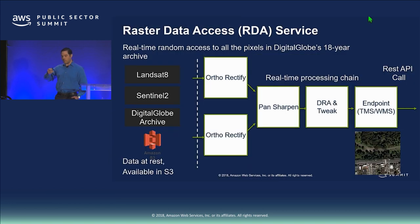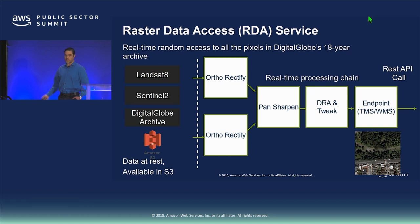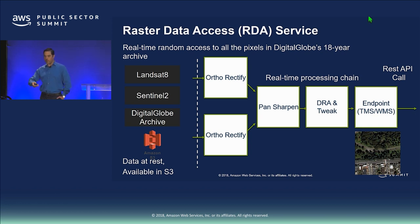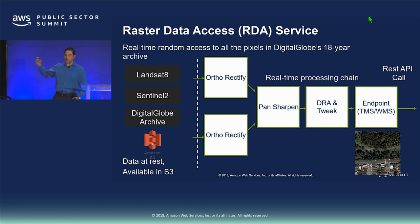Now I want to get into the real meat and talk about our Raster Data Access service, which we call RDA. This is our system that gives us real-time random access to all of the pixels in our 18-year archive of the Earth. Data sits on S3 — our own archive data, plus Amazon nicely puts Landsat 8 and Sentinel 2 there for free. The key is that the data has to be in some kind of random access or cloud-optimized format — cloud-optimized GeoTIFF works great. You can even bring your own cloud-optimized GeoTIFF, stick it in a bucket, and point RDA at it.